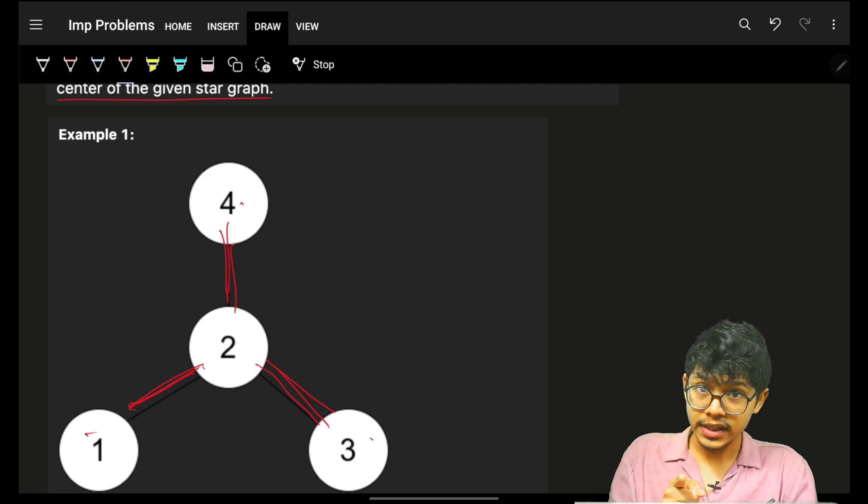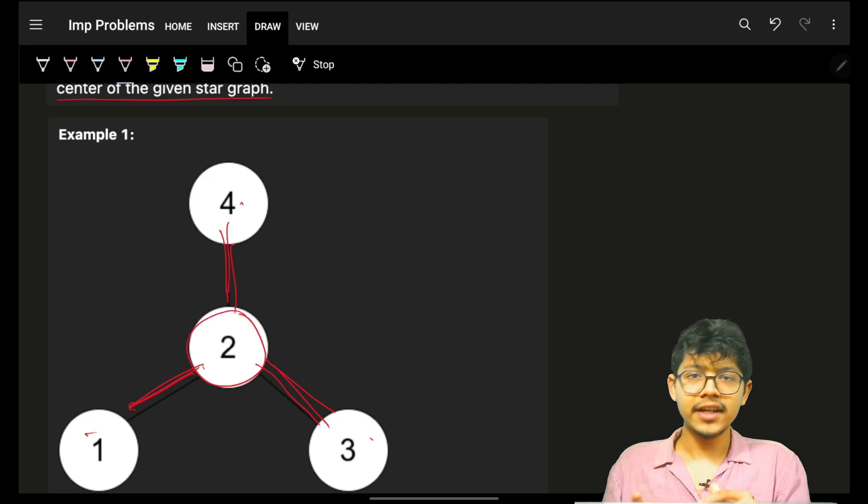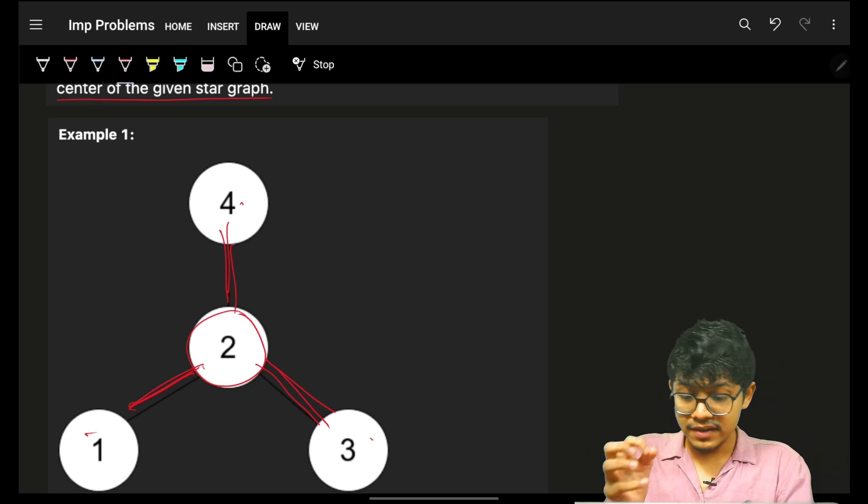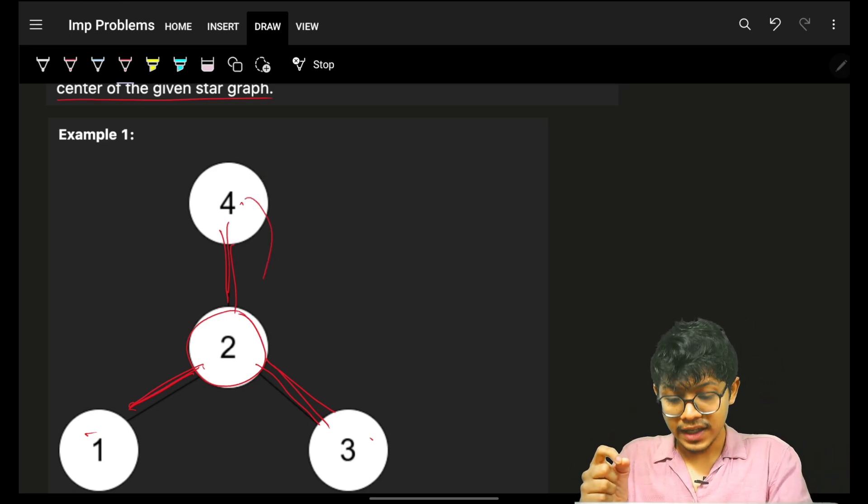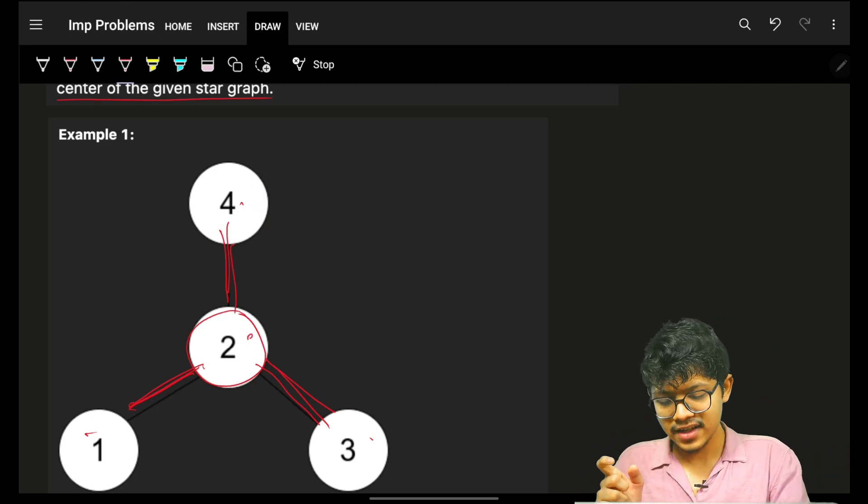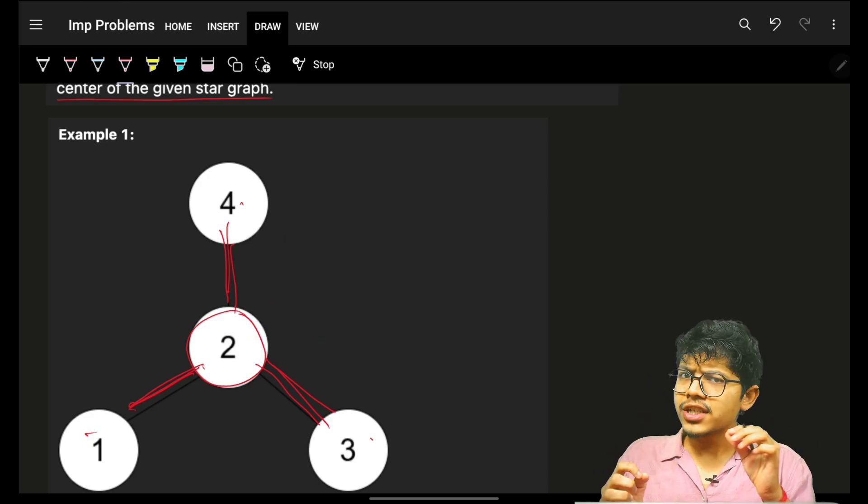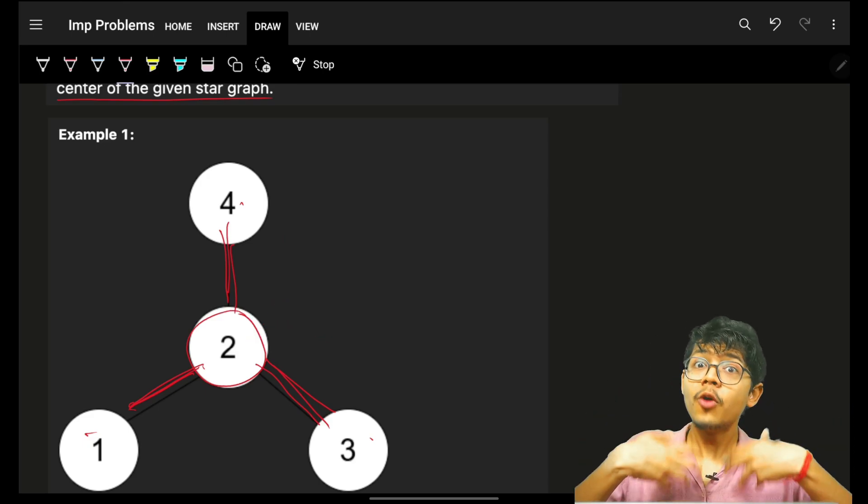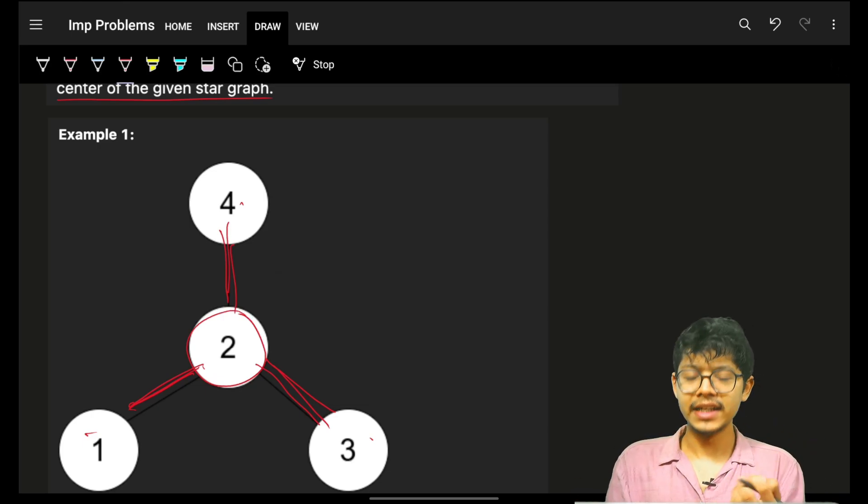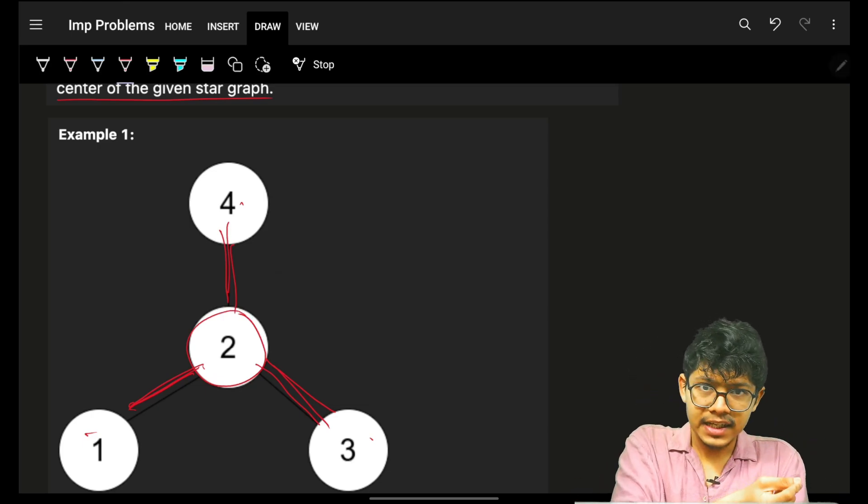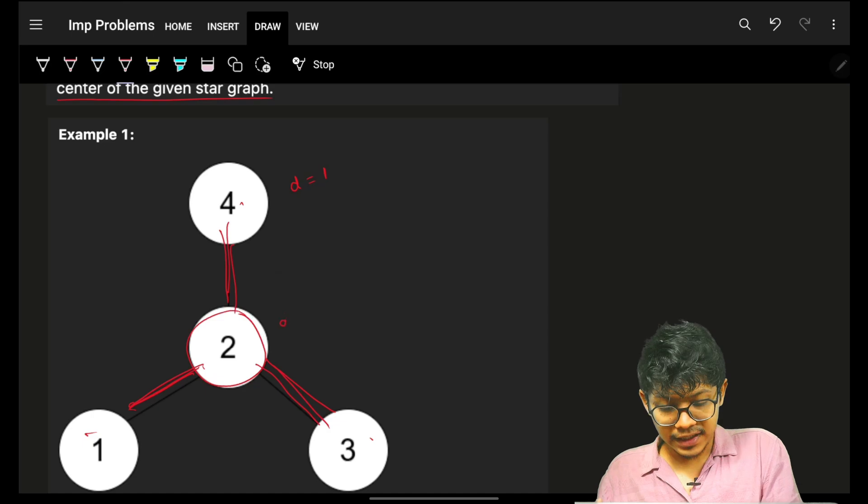The property of this center element is that everyone else is connected to it, and it is connected to everyone else. How to monitor that connection between nodes? How many nodes they are connected? Simply degree.